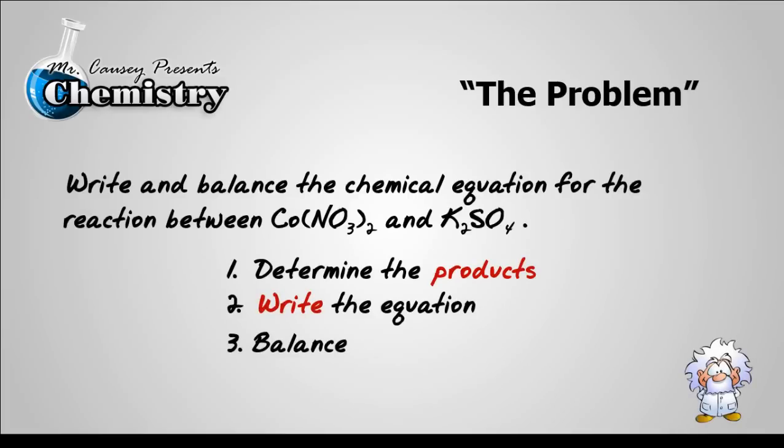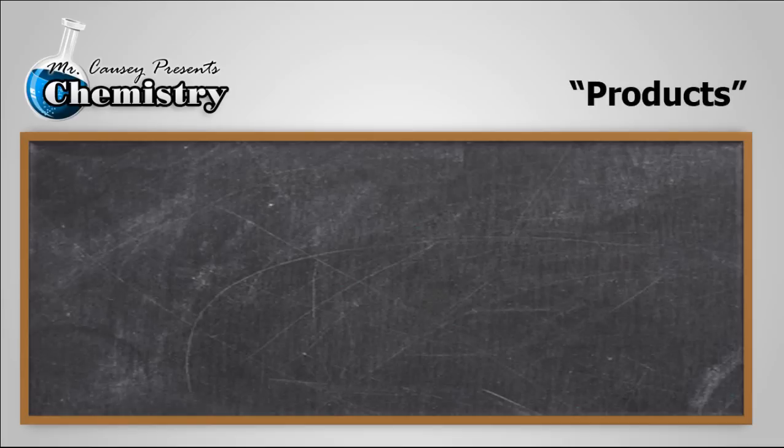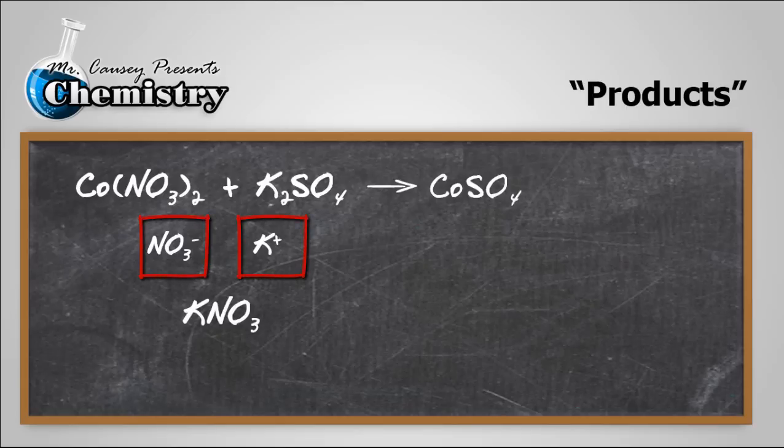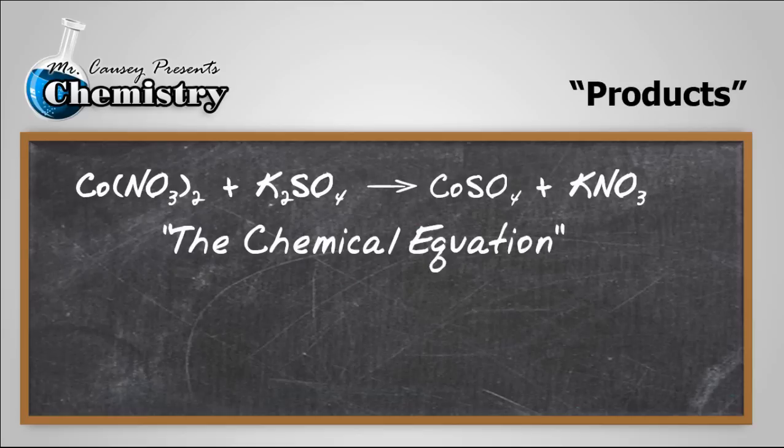Alright, so let's go to the blackboard. First, let's determine the products. Here's the reactants and now the reactants are going to break up into cobalt 2 ion and nitrate and potassium and sulfate. And the cobalt and sulfate will balance real good with each other. And the potassium and nitrate will go together. Charges match up and we have a chemical equation, but it's not balanced.